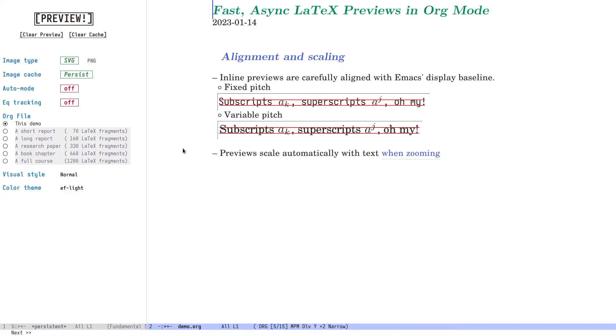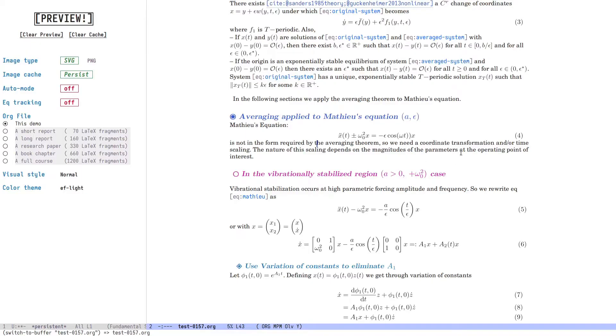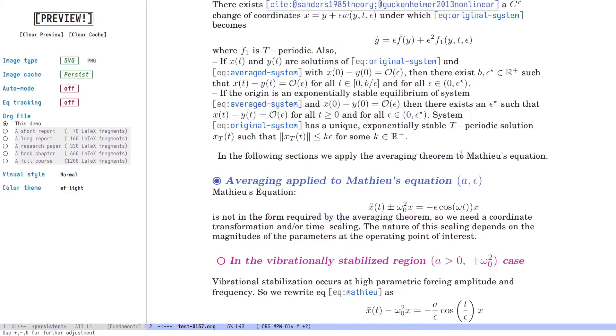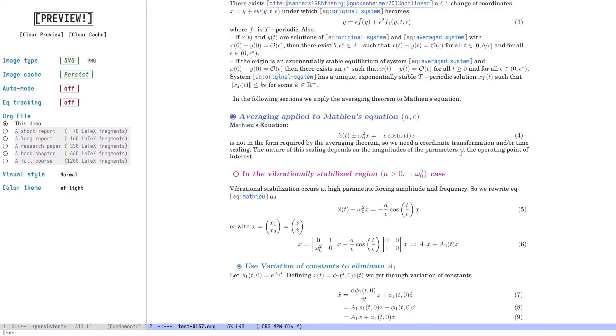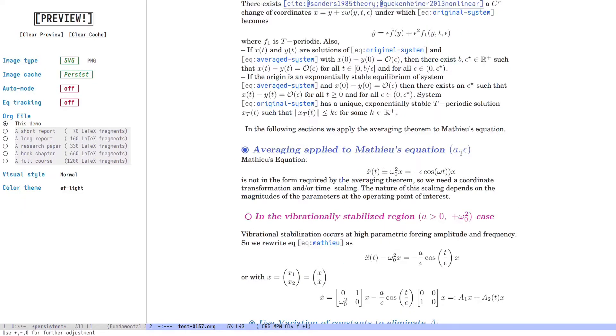There's more. Inline previews are carefully aligned to Emacs baseline when they're displayed. This works with fixed pitch fonts and with variable pitch fonts. Previews now scale with the text when you zoom in or out. Let's go back here and let me try zooming in and zooming out. And you'll notice that previews retain their size relative to their surrounding text.